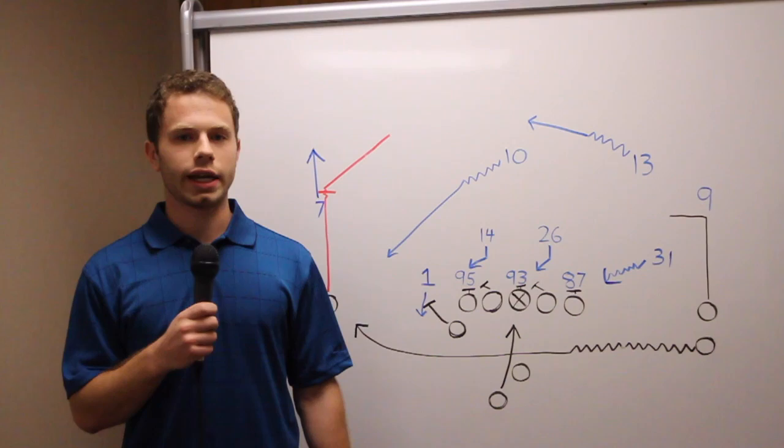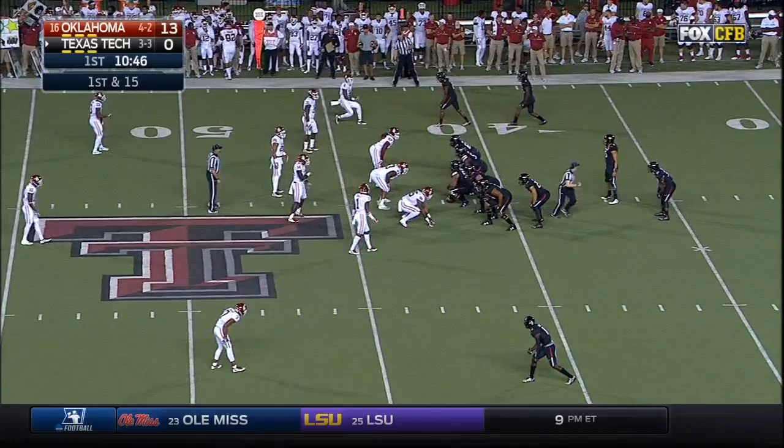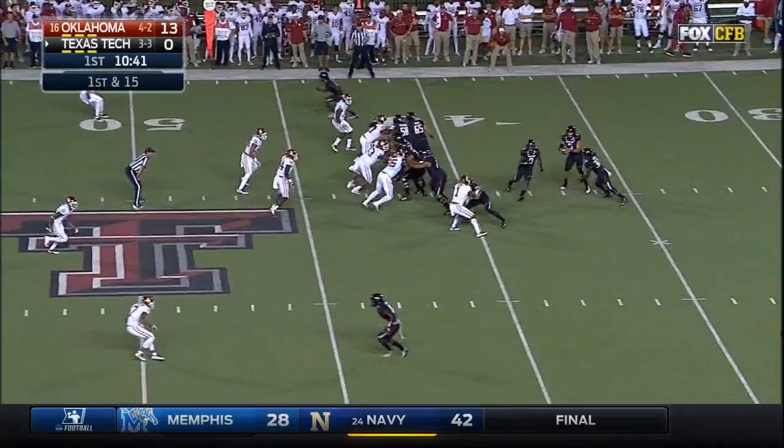This first play that we're going to look at is sort of a microcosm of all four of these, but it's a good way to measure how prepared the defense was, because it's a variation of something Texas Tech uses quite frequently. On first and long, Texas Tech calls a simple three-part play that's meant to take advantage of OU's zone coverage.